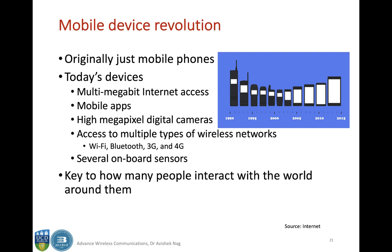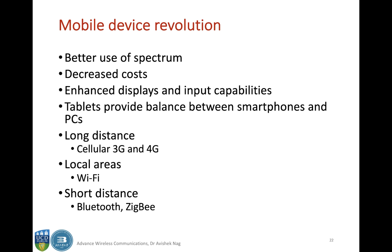This is a revolution we are facing in terms of technology. We can make better use of the spectrum, costs have decreased, and phones have enhanced displays and input capabilities. Tablets provide a balance between smartphones and PCs. We have long-distance technologies like cellular 3G and 4G, local area technologies like Wi-Fi, and short-distance technologies like Bluetooth and Zigbee.